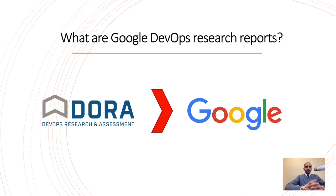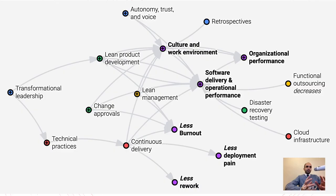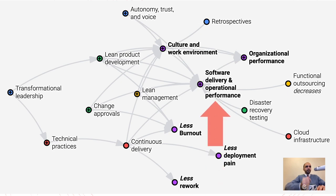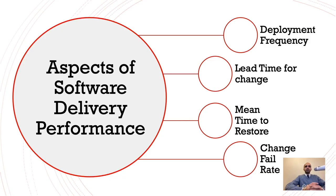To impact the performance of the whole organization, there are several aspects to consider: software delivery, which we are going to focus on today, culture and work environment, lean management, lean product, and technical practices like continuous delivery. All of these gather together to drive organizational performance, and we are going to focus on measuring the aspects of software delivery performance.